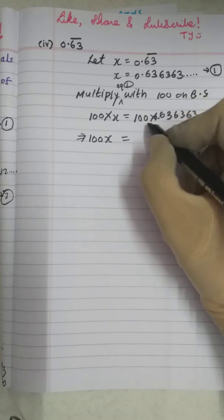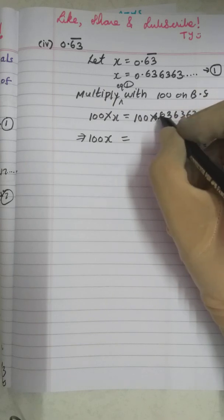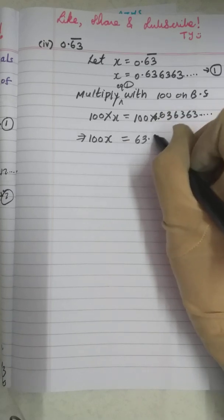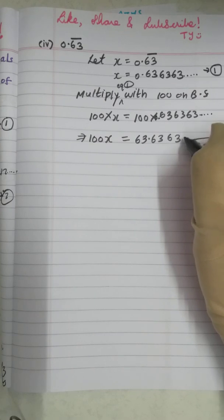So now, what will 100 × X become? 100 × X becomes 100X and how to multiply this 100 with this 0.636363? Remember, whenever multiplication is there, shift it by right side. Since there are two zeros, you will shift it by two places. So what does this number become? 63.6363 and so on. Let this be equation 2.